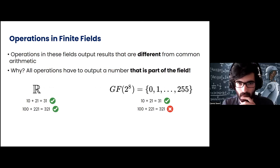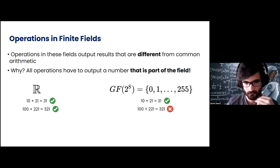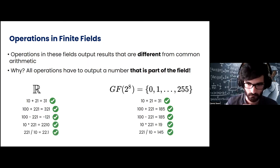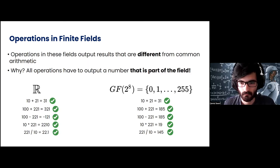Operations in these fields output results that are different from common arithmetic, because all these operations have to output a number that is part of the field. So what happens when, for example, we have an addition that goes over the boundary? That result is not in the field. So we need to redefine all of these operations so they conform to the invariant that they have to output a number that is part of the field. Here are all the correct outputs for all of these operations.